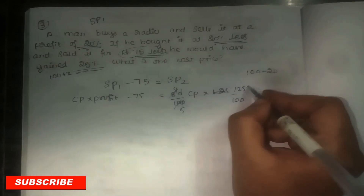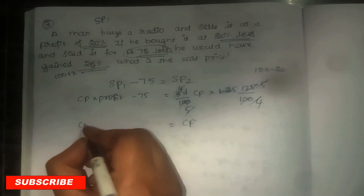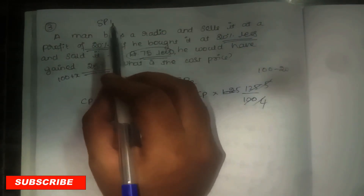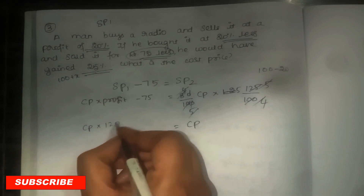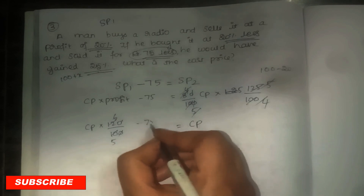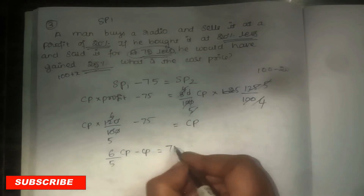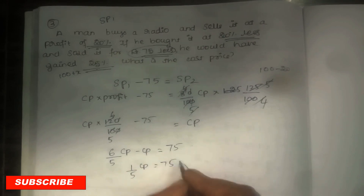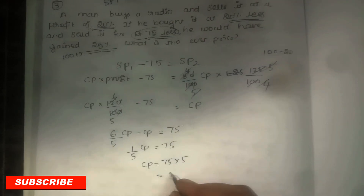Working through: (4/5) × (5/4) × CP. First profit is 20%, written as (100 + 20)/100 = 120/100 = 6/5. So the equation is: (6/5) CP − 75 = (4/5) CP × (5/4). Simplifying: (6/5) CP − CP = 75. Taking LCM: (1/5) CP = 75. So CP = 75 × 5 = Rs. 375.